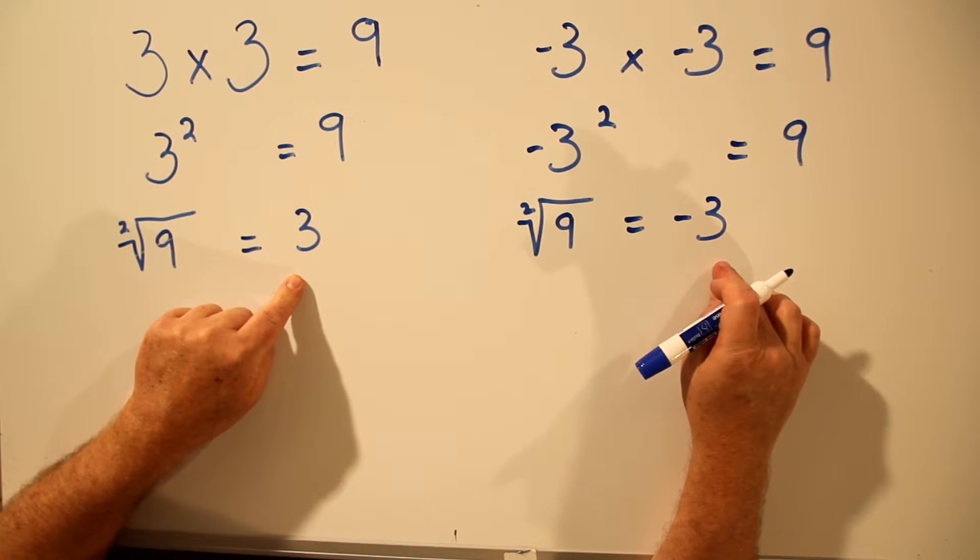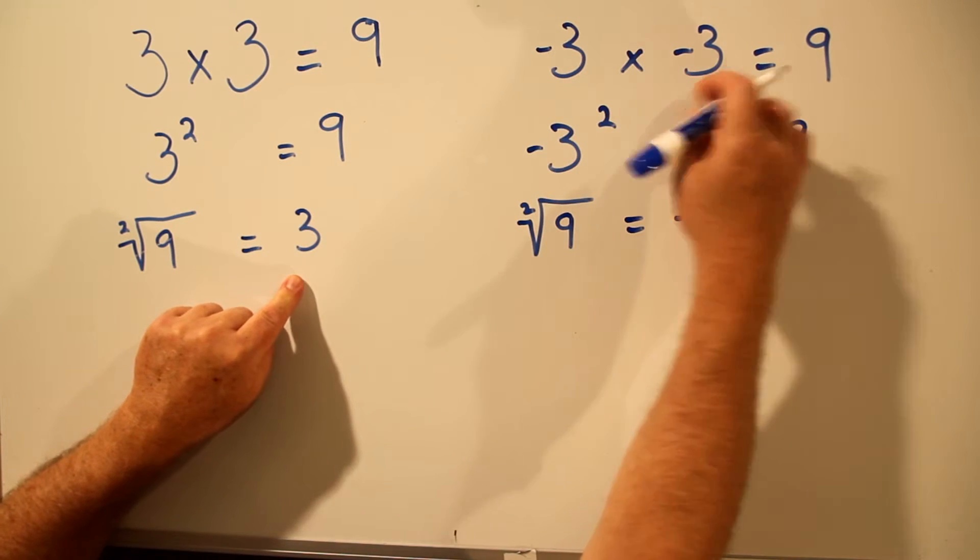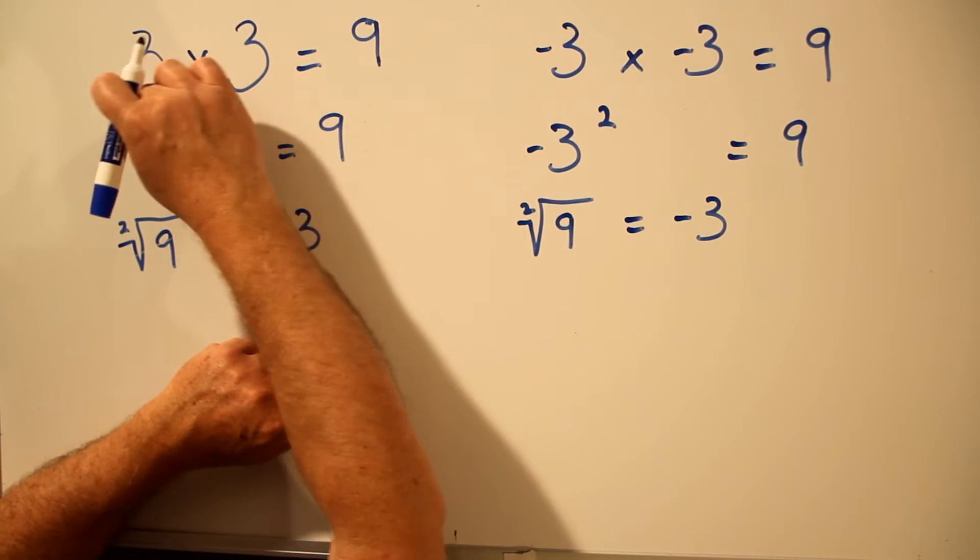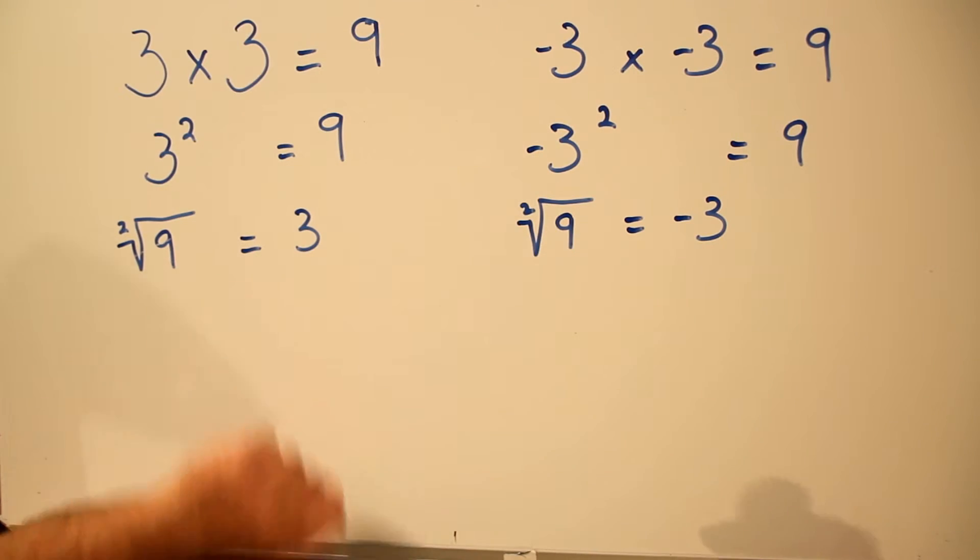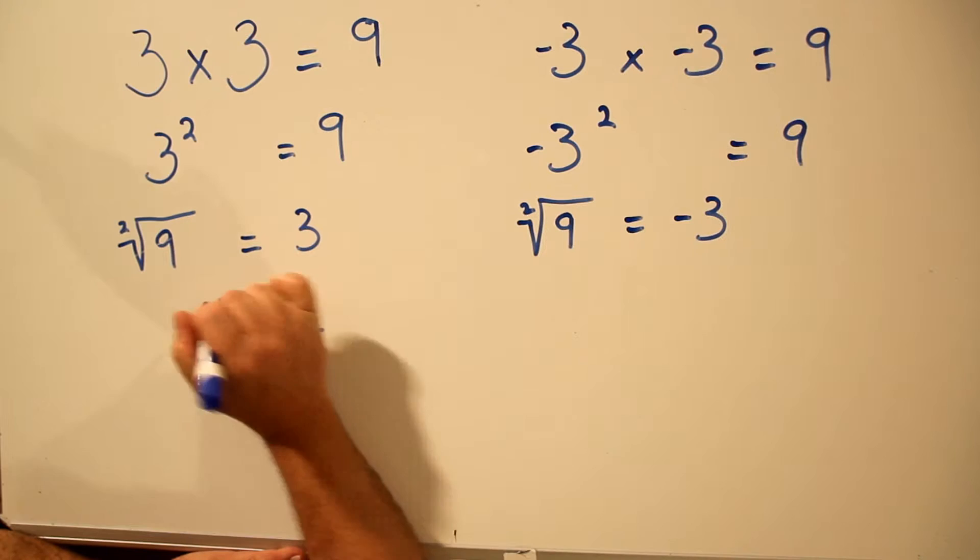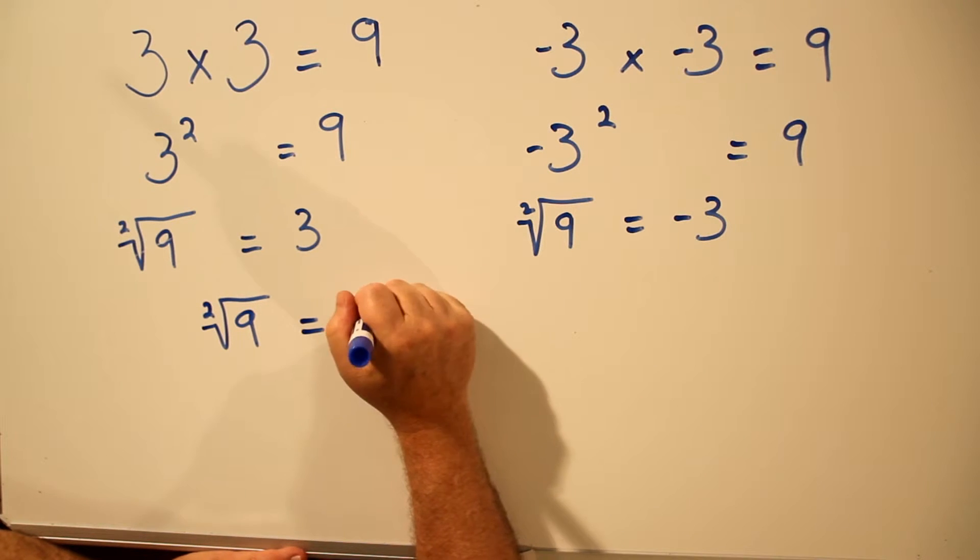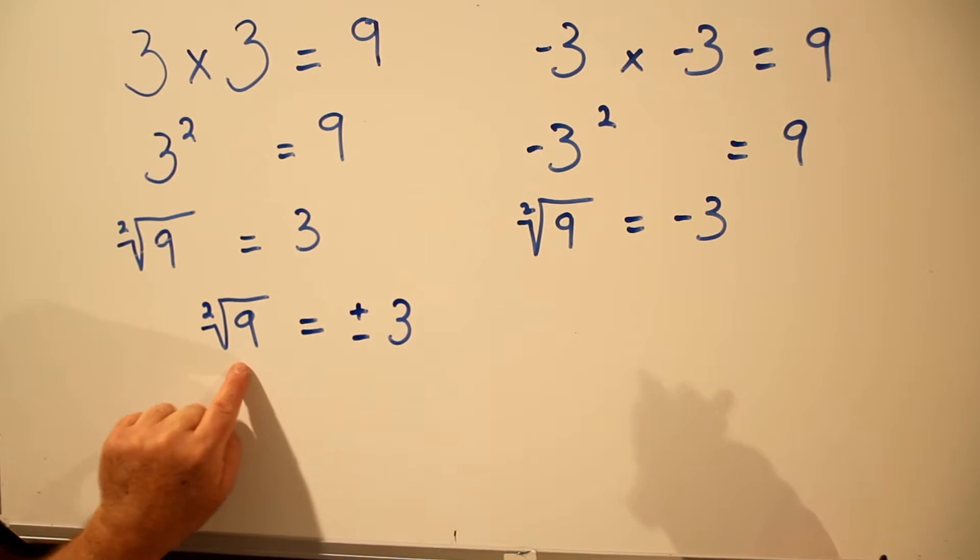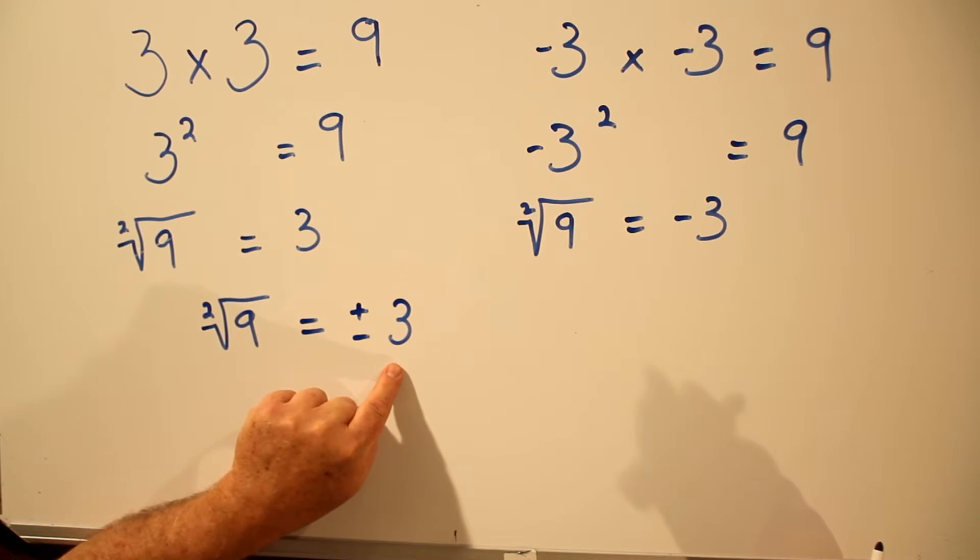We just said that the square root of 9 equals positive 3. Well, it turns out there are two answers, because a negative times a negative gives us a positive, and a positive times a positive gives us a positive. So how we write square root is like this.